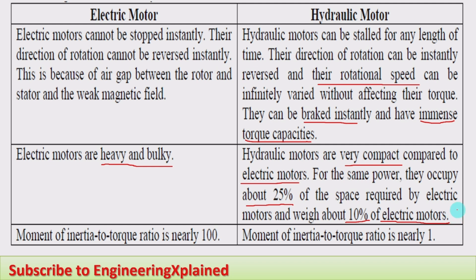For this reason, hydraulic motors are preferred for delivering rotary power. The third point is that the moment of inertia to torque ratio is nearly 100 for electric motors, whereas for hydraulic motors that ratio is nearly 1, which is a significant advantage.